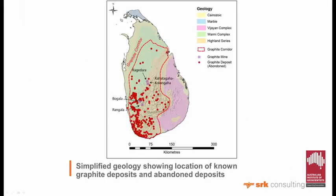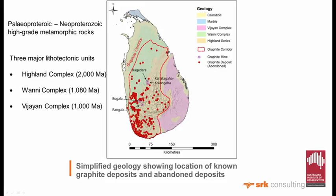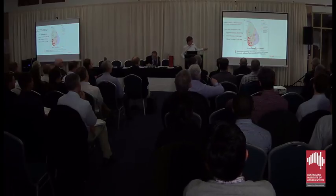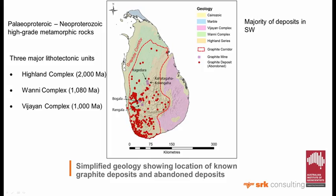A very simplified geology map of Sri Lanka shows mostly Palaeoproterozoic to Neoproterozoic high-grade metamorphic rocks, with younger sequences in the north including some limestones and Cenozoic superficial deposits covering the metamorphic basement. The crust is very old and there are three main complexes. As you can see from the depiction of this corridor where all the old abandoned graphite deposits occur, they all tend to be within the Highland and Wani complexes only. The majority of the deposits are in the southwest of the country, located within this north-northeast to south-southwest corridor, which may suggest some kind of regional structural event to explain their occurrence.